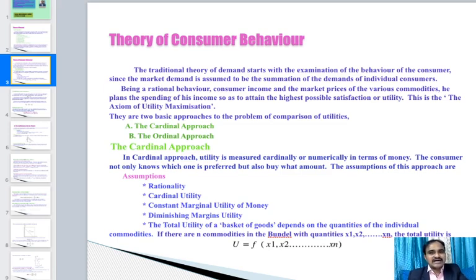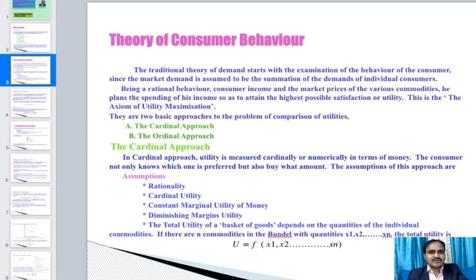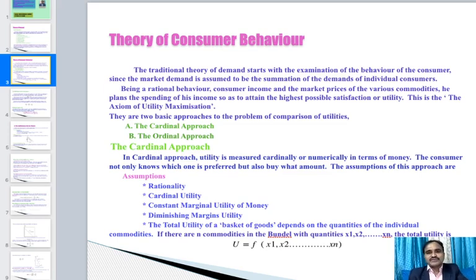This is the axiom of utility maximization. There are two basic approaches to the problem of comparison of utilities: the cardinal approach and the ordinal approach. In the cardinal approach, utility is measured cardinally and numerically in terms of money. The consumer not only knows which option is preferred but also by how much.